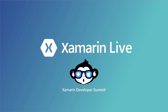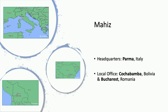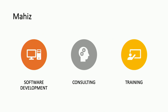My name is Dan Ardellan. I am a Microsoft MVP on Developer Technologies, former MVP on Windows Development and Windows Phone. I co-own a small company in Italy, and today we're going to talk about memory leaks in Xamarin applications. Two words about my company: headquarters are in Italy, with local offices in Cochabamba, Bolivia and Bucharest, Romania. I traveled here from Cochabamba — it took 18 hours. I was a Xamarin University certified trainer until it was merged into Microsoft Learn.